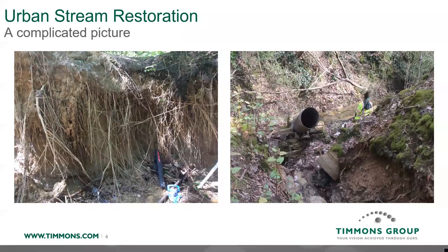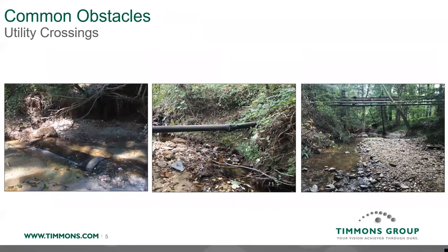Thanks, Alex. I'm going to start really big picture. A lot of what we deal with in urban stream restoration involves many constraints found on site. We see a lot of utility crossings — sewer, electric, cable, anything. You can see a sewer line crossing through the bed of the stream, some sewer lines suspended above the stream due to erosion over time, and even some utilities constructed to be suspended about 10 feet above the stream center. Lots of interesting things with utility crossings.